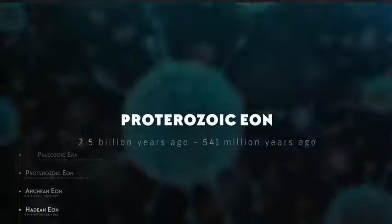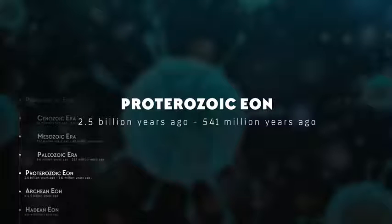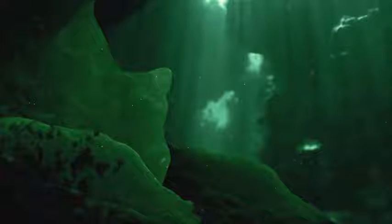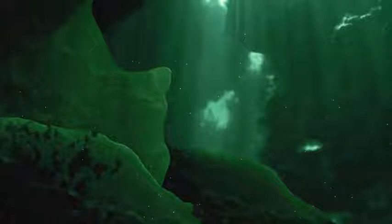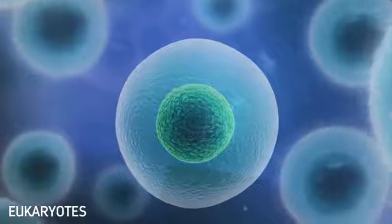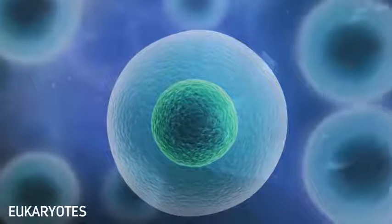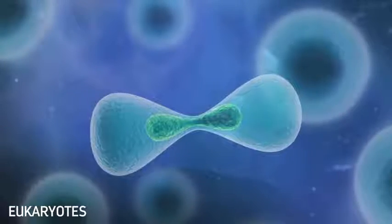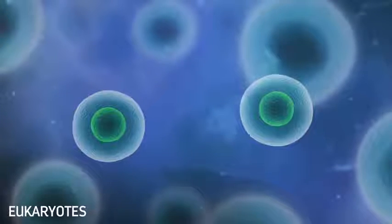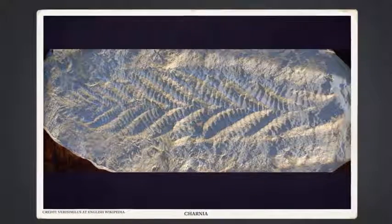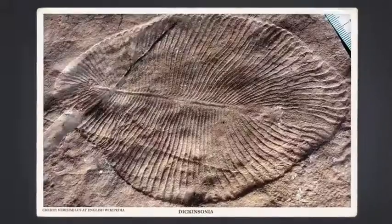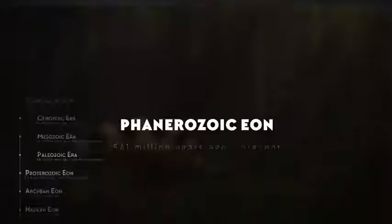2.5 billion years ago, the Archean gave way to the Proterozoic eon, meaning earlier life. Around this time, photosynthetic bacteria, along with some multicellular forms of life, spewed tons of oxygen into the atmosphere. This probably wiped out most of the anaerobic life on Earth, but it cleared the path for crucial new organisms — including the ancestral eukaryotes, whose cells each had a nucleus and organelles wrapped up in membranes. Eukaryotes developed into the first really big, complex, and sometimes weird forms of life, such as the frond-like Charnia and the plate-shaped Dickinsonia. These new larger organisms quickly diversified, and by 541 million years ago, we were at the doorstep of the next and current eon, the Phanerozoic.